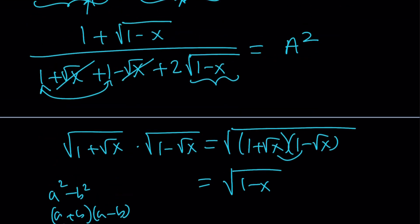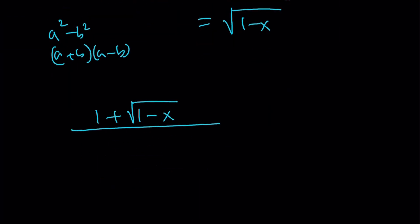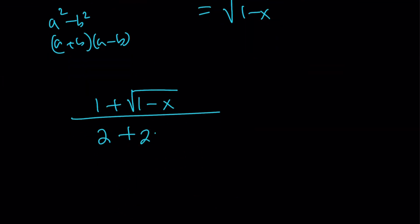Okay, so now let's go ahead and copy that down. We got 1 plus the square root of 1 minus x, divided by 1 plus 1, which is 2, plus 2 times the square root of 1 minus x. And this is equal to a squared.